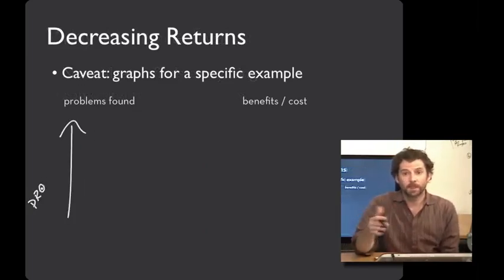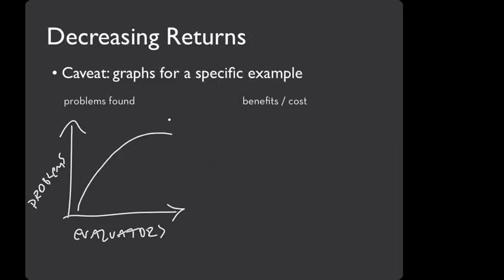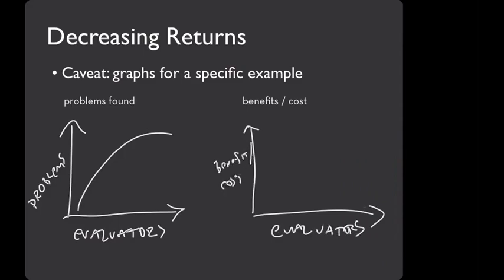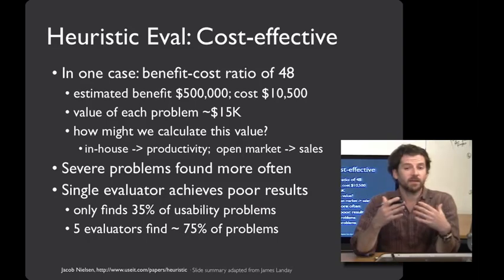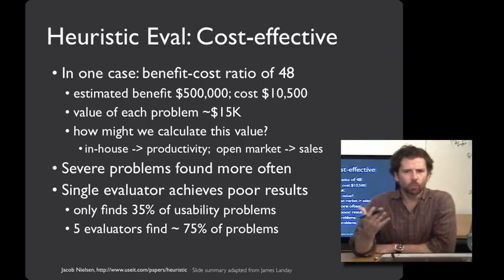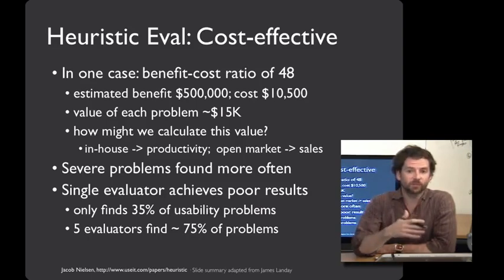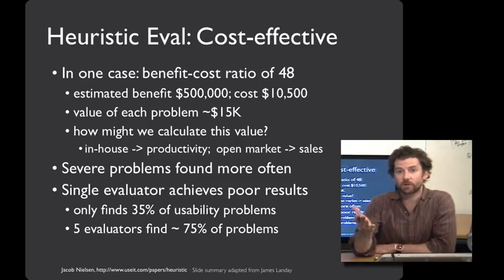So, why not have lots of evaluators? Well, as you add more evaluators they do find more problems, but it tapers off over time. From a cost-benefit perspective, it just stops making sense after a certain point. Jacob Nielsen's rule of thumb is that three to five people tends to work pretty well, and that's been my experience too. In one study that Jacob Nielsen ran, he estimated that the cost of the problems found with heuristic evaluation were $500,000, and the cost of performing it was just over $10,000 — giving a 48-fold benefit-cost ratio for that particular user interface.